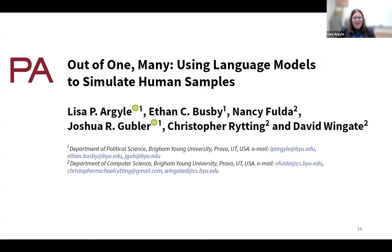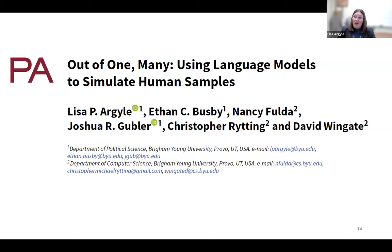Our big overarching question is whether generative language models are accurate enough at simulating people that they can be studied as if they were people — whether we can learn things about real people through using language models to uncover patterns and information. We published this paper, 'Using Language Models to Simulate Human Samples,' in Political Analysis in 2023. We submitted it in November 2021, so functionally all the analysis is two or more years old. At the time, social scientists really weren't paying attention to GPT-3; computer scientists were excited, but things were already moving very quickly.